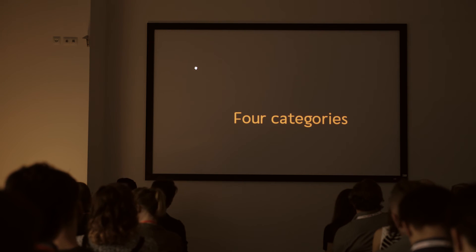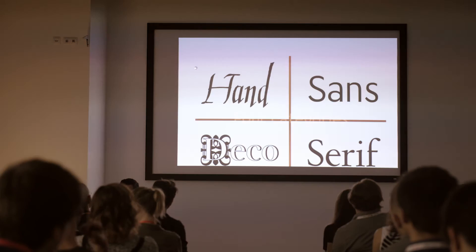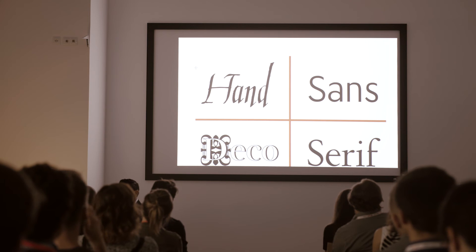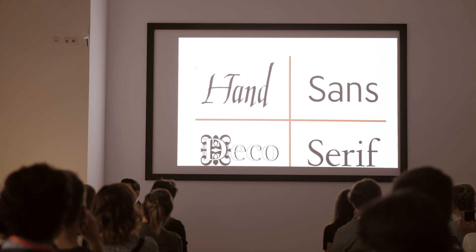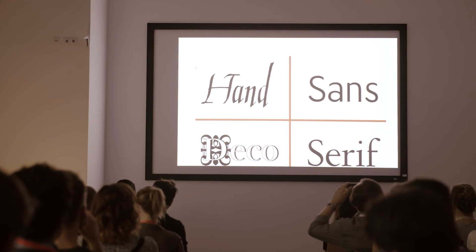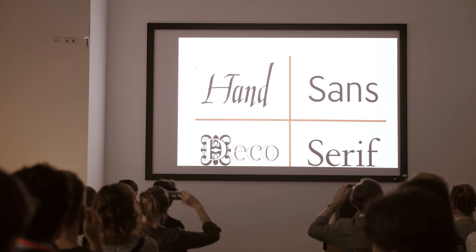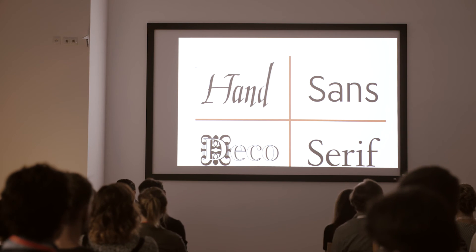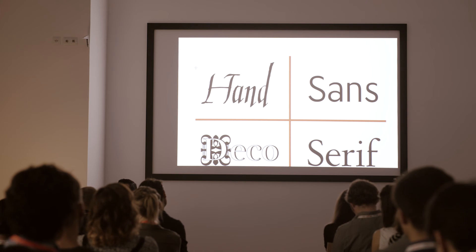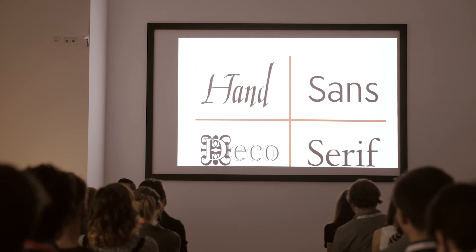The proposal I have here today divides type material in four simple categories: serif, sans, deco, and hand. In the serif category, we can put any serif font — it doesn't matter the style, the contrast, or the thickness. In the sans, we have fonts without serif in any style. Deco is any font with some kind of decoration, such as ornaments, extra drawings to the letter form, effects like shadows, inlines, flares, etc.